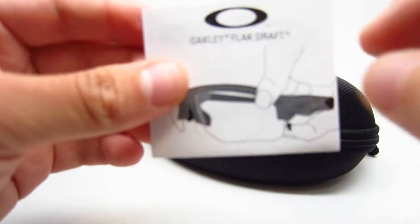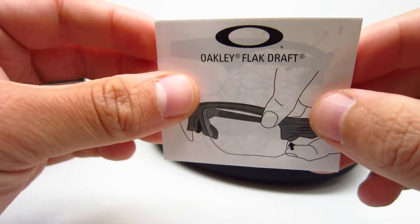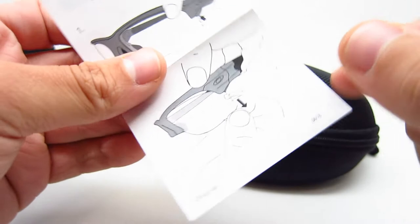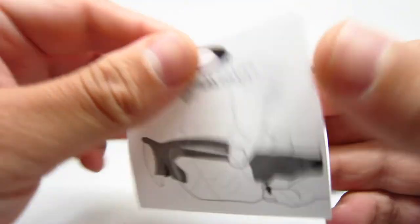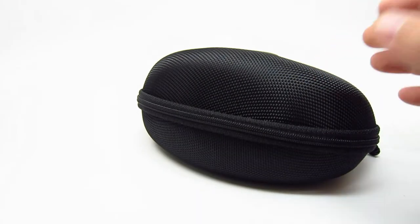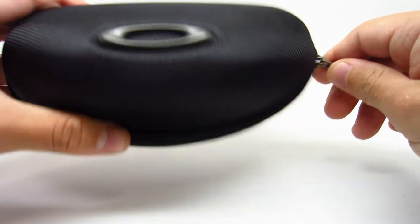Also for this particular Flak Draft, the lenses are easily removable. I'll show you how to remove it shortly, but it's really really easy. You don't even need the instructions if you have a brain, it's that simple.